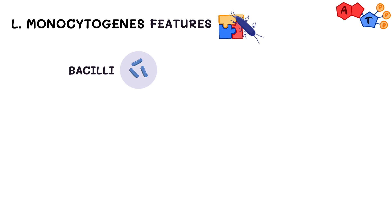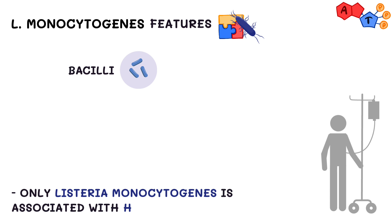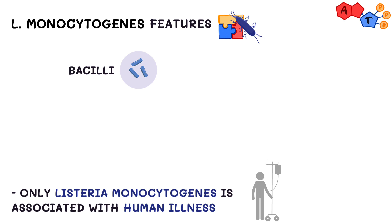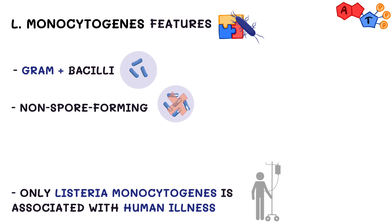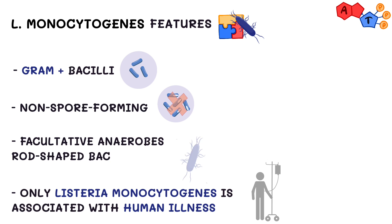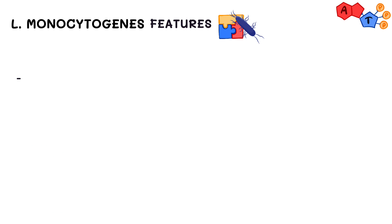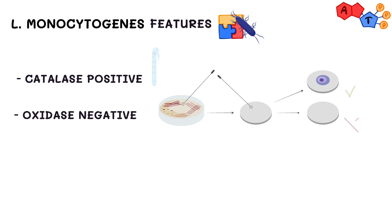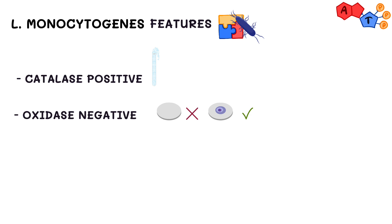Listeria monocytogenes belongs to the class of bacilli and there are currently 10 species that belong to Listeria. However, only Listeria monocytogenes is associated with human illness. The bacterium is gram-positive, non-spore-forming, facultatively anaerobic, and rod-shaped. It's catalase-positive and oxidase-negative, and it expresses beta-hemolysin, which causes destruction of RBCs on blood agar.